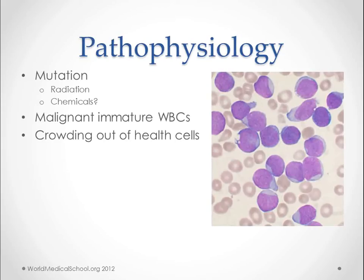What happens here is we get cells that are multiplying without control. That's caused by some kind of mutation in the cell, in the DNA, that turns off the regulation processes. A lot of times this is set off by radiation or some kind of chemical, but also a lot of these just pop up spontaneously.